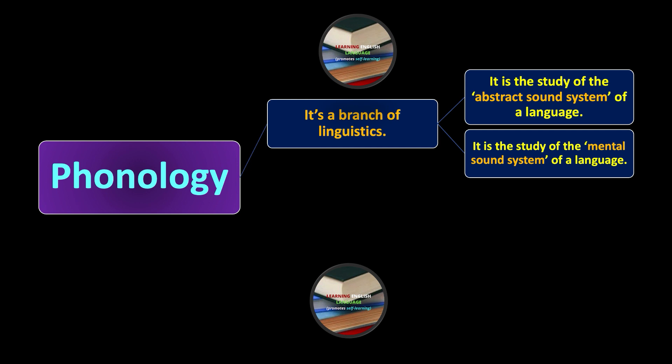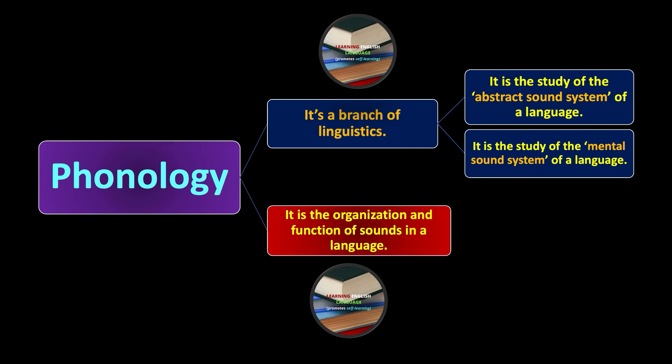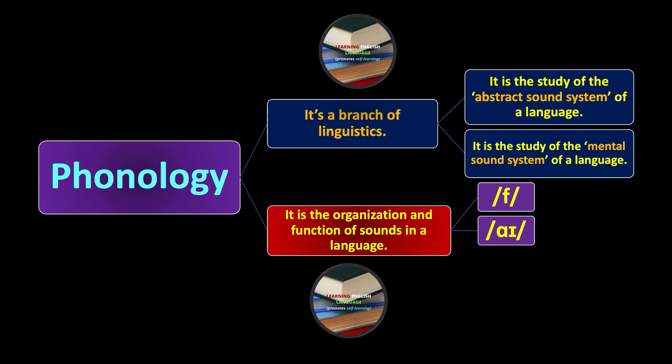Let's have some more points to understand this concept. It is the organization and function of sounds in a language — how sounds are organized, how sounds function within a word. Let's have an example to understand this concept. We have a sound 'f', we have a sound 'i', and then we have a sound 'n'. We have three different sounds.